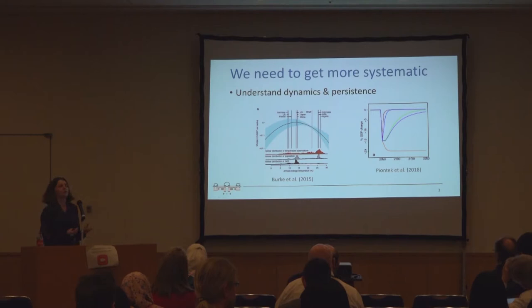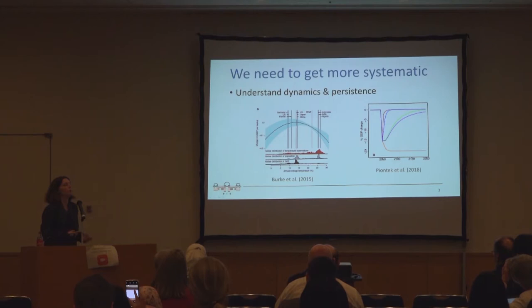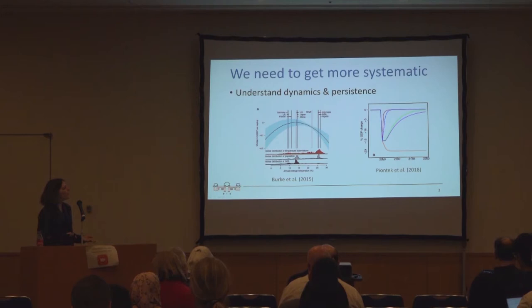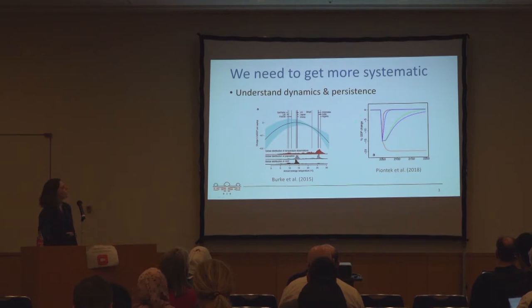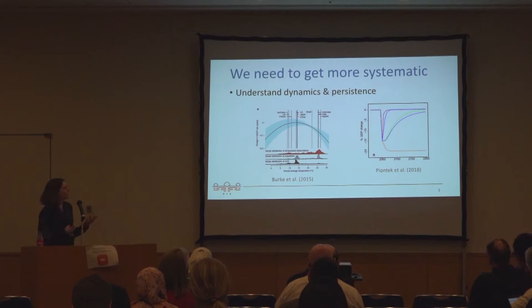Everybody picks certain aspects, puts them into studies, and gets interesting results, but we are still lacking a comprehensive understanding of what really matters and how we need to model it. I want to address a couple of aspects: the first is to understand the dynamics and the persistence — this relates to the debate on growth versus level effects — which the econometric community has to answer, but we also need to think about what this means for our models and what the underlying dynamics are if you have persistent or growth effects.